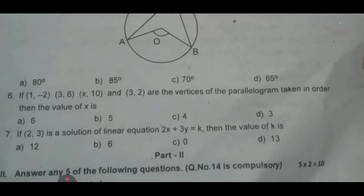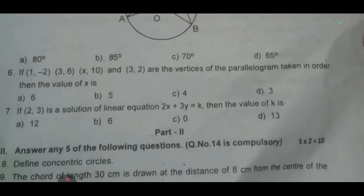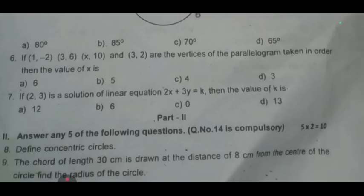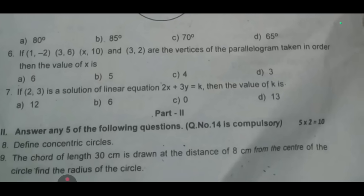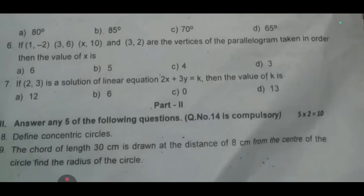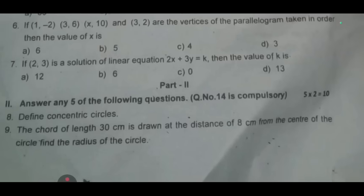Next one: two marks, so two marks is part 2, any five questions. Question number 14: define concentric circles. Ninth one: the chord of length is 30 cm, it is drawn at a distance of 8 cm from the center of circle, find the radius of the circle.